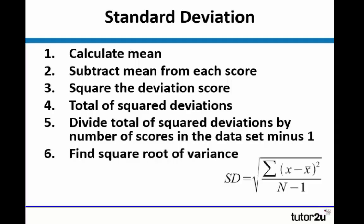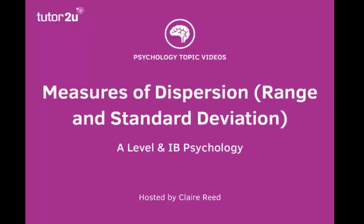So this is it. Step by step, standard deviation. Calculate the mean. Subtract the mean from each score. Square the deviations. Find the total of the squared deviations. Divide that by the number of scores in the data set minus 1. And then find the square root of the variance. That was a brief introduction to measures of dispersion, range and standard deviation for A-level and IB psychology.